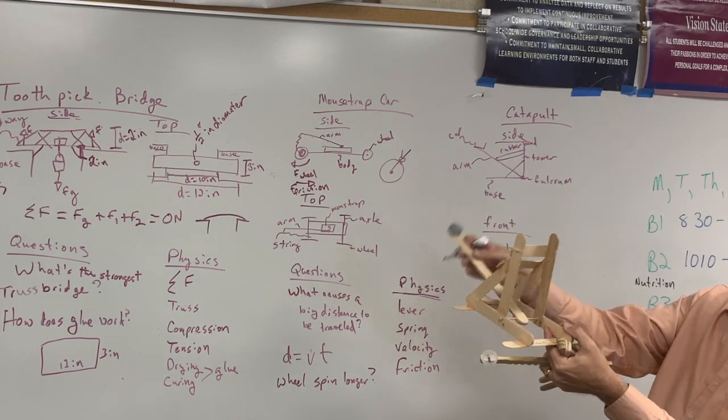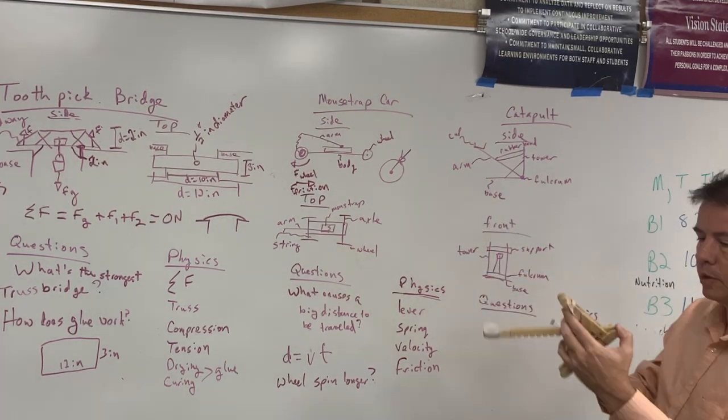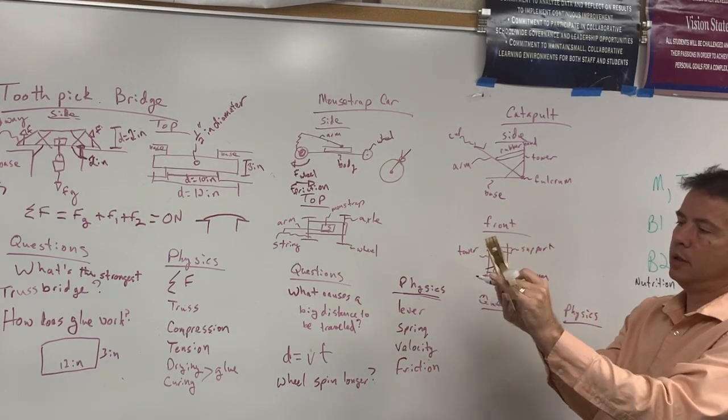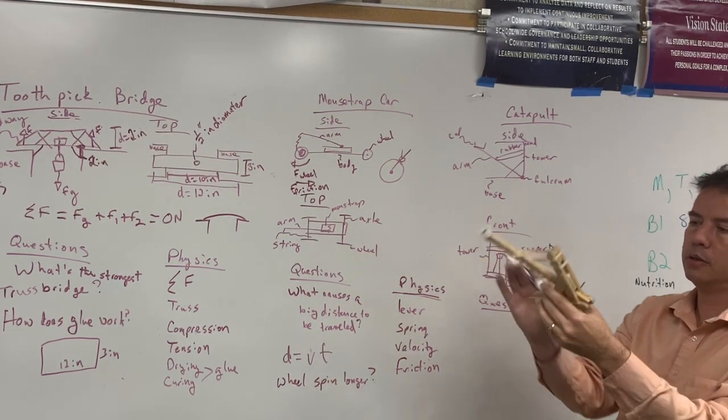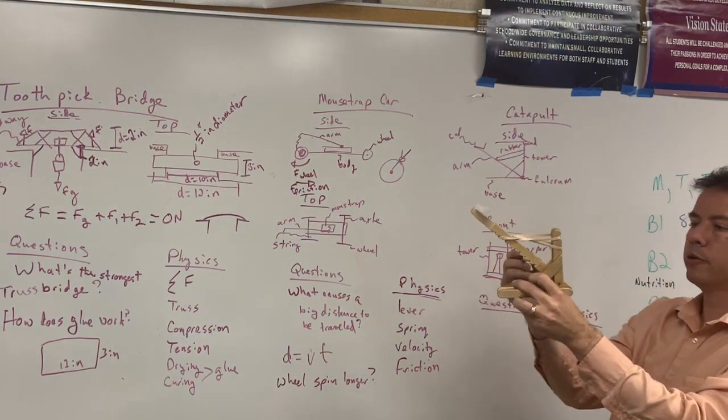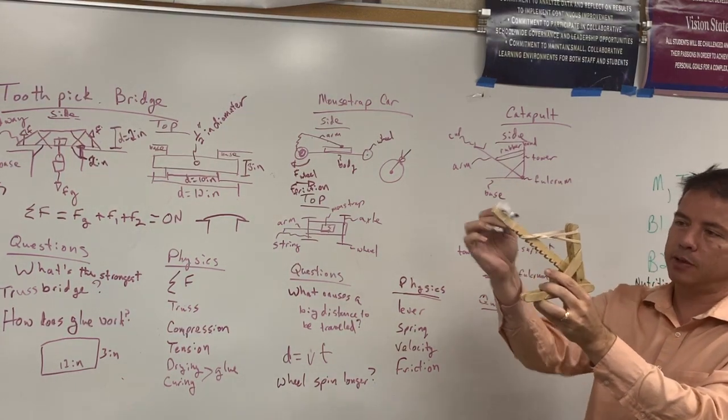Here in the center is a fulcrum. The fulcrum is the point about which the catapult rotates. Then we have the rubber band that we pull back and let go.